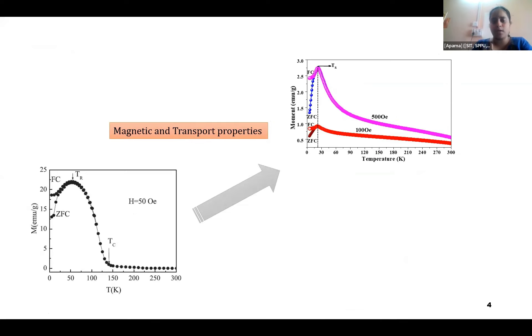In the literature, they have taken it for a field of 50 Oersteds. And in my case of study, I have done it for 100 Oersteds as well as 500 Oersteds. In both the cases, there is a bifurcation obtained. It has been attributed to the spin glass behavior.